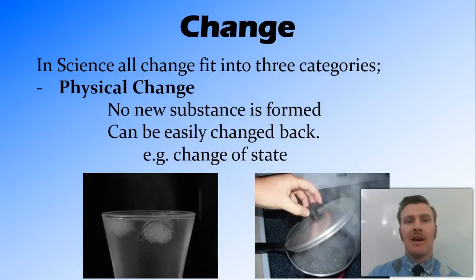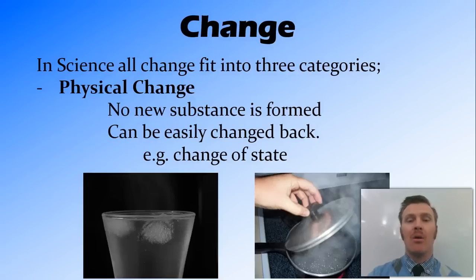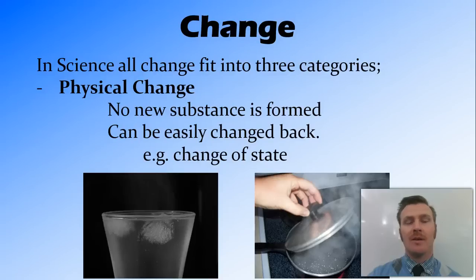We have three different types of change that all things in science can fit into. The first one is physical change. In physical change, no new substance is formed and it can easily be changed back. An example of a physical change would be the change of state from water to steam, or from ice to water. No new substances are being formed — it's all water molecules, H2O.